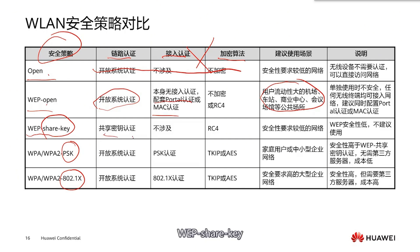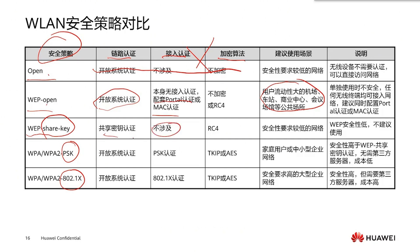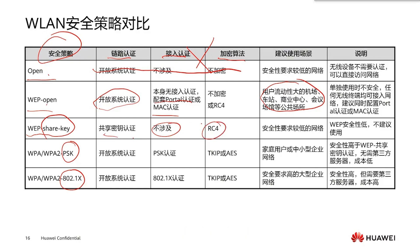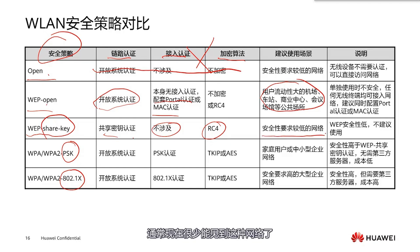The third type is WEP shared key. In this case, access authentication is not involved, but there is an encryption algorithm called RC4. This situation is used in networks where security requirements are relatively low, and these types of networks are rarely seen nowadays.